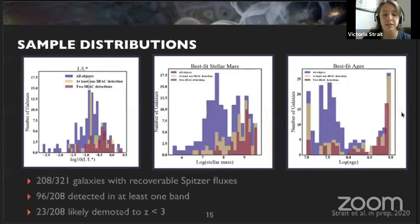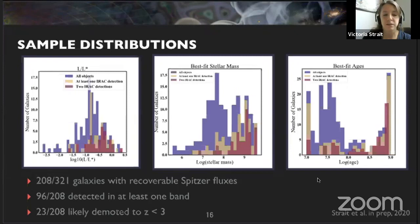To give some diagnostic plots of the entire sample: we will be releasing a full catalog of Spitzer fluxes and stellar properties for all 300 galaxies. I was able to recover Spitzer fluxes for 208 of these, and 23 were likely demoted to low redshift. This paper should be done and out pretty soon.